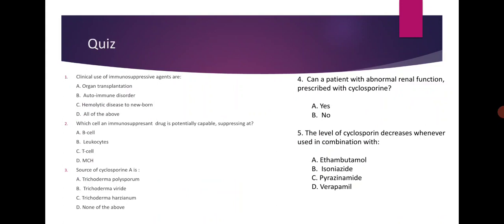Question 5: The level of cyclosporine decreases whenever used in combination with ethambutol, isoniazid, pyrazinamide, or verapamil. The correct answer here is isoniazid.